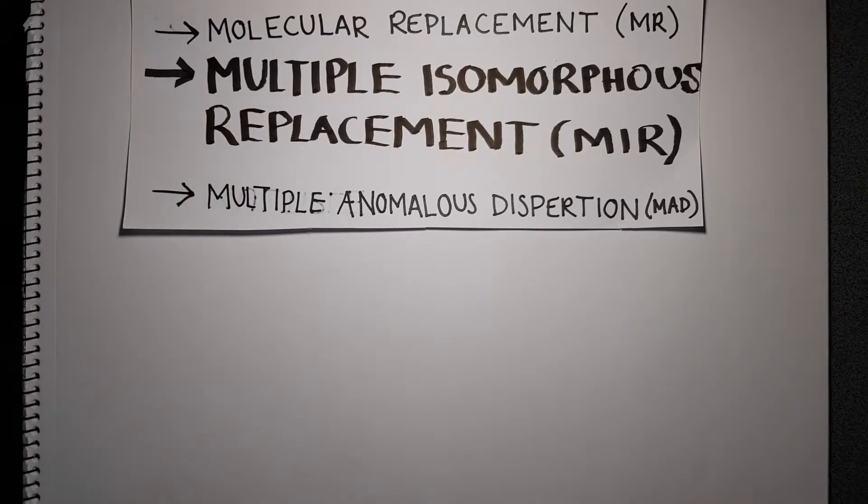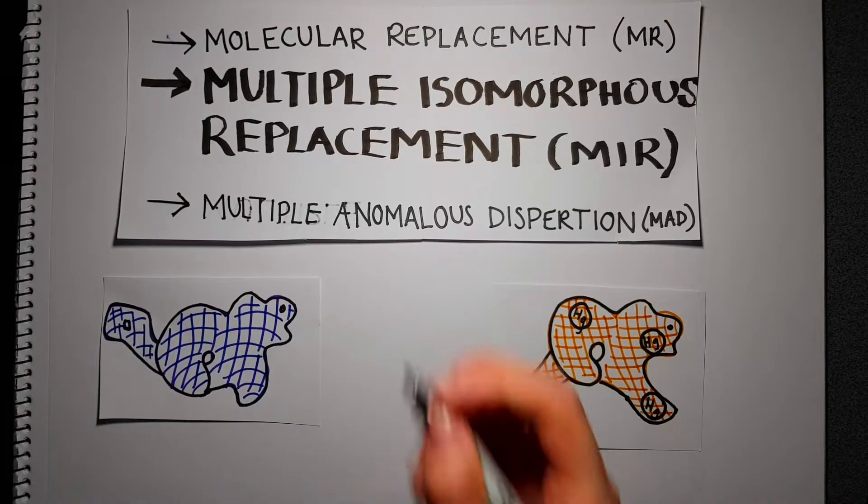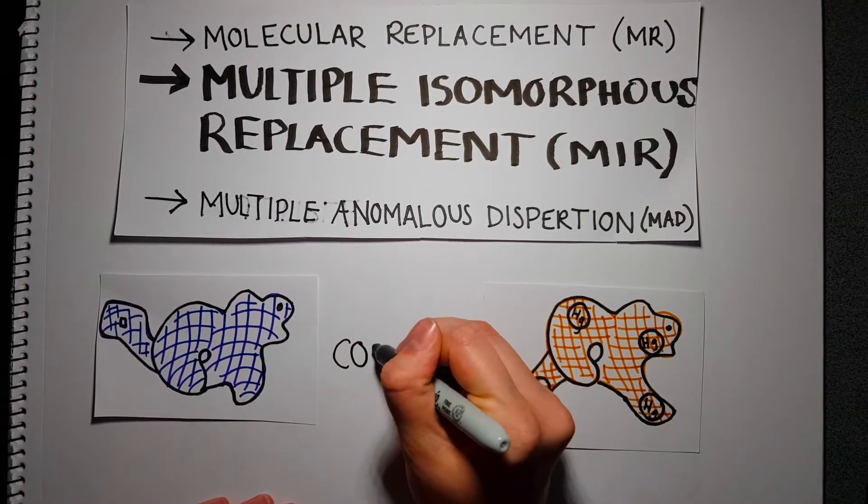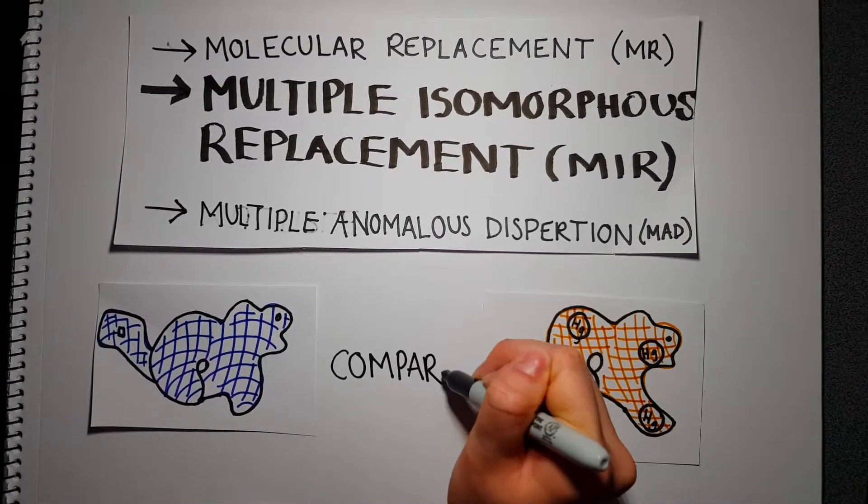This becomes useful when comparing electron density maps of two crystals: one containing the native protein and another with heavy atoms incorporated. The difference between them is largely due to the heavy atoms' scattering contribution.